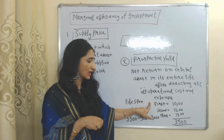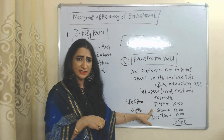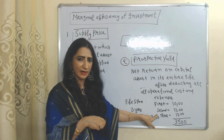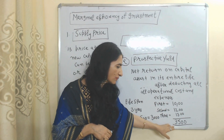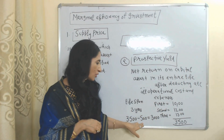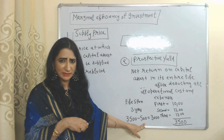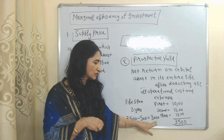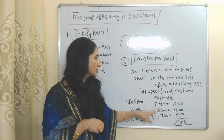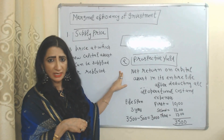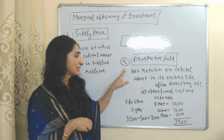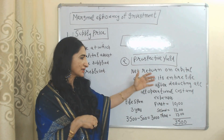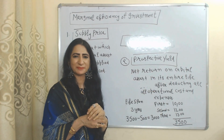First year return is 1,000; second year return is 1,200; third year return is 1,300. When we add them, the total becomes 3,500. Operational costs and other expenses equal 500. So 3,500 minus 500 equals 3,000. This 3,000 is called prospective yield, because it is the net return on a capital asset over its entire lifespan after deducting all operational costs and expenses.